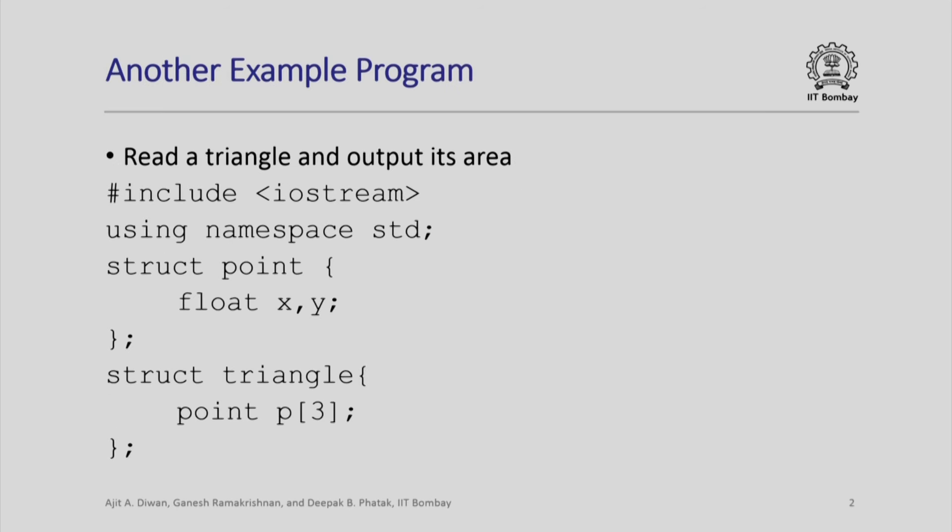Let us go back and see the declarations. We have declared a structure called point which stores two floating point values. This will be used to represent a point in the plane, and a triangle is a set of three points in the plane. We are declaring a type called triangle which stores an array with three points. So we build more complicated data types using the built-in types and constructs in C++ that allow you to define other types.